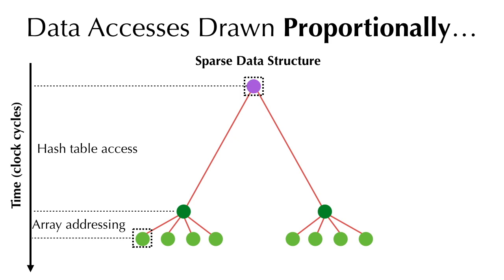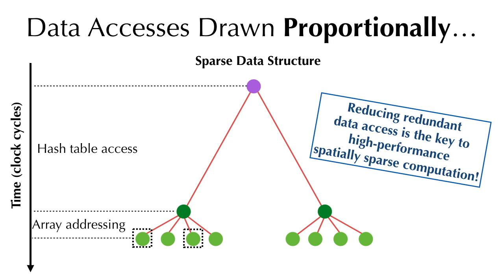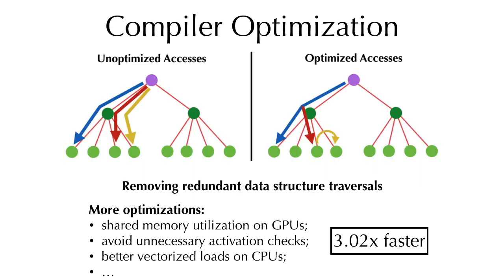If we have a second access to a nearby voxel, the second hash table access is redundant. Detecting and eliminating this redundant access at compile time is of vital importance. Our compiler optimizations are centered around reducing redundant accesses. Our benchmarks show our optimizations speed up Tai Chi programs by a factor of three.